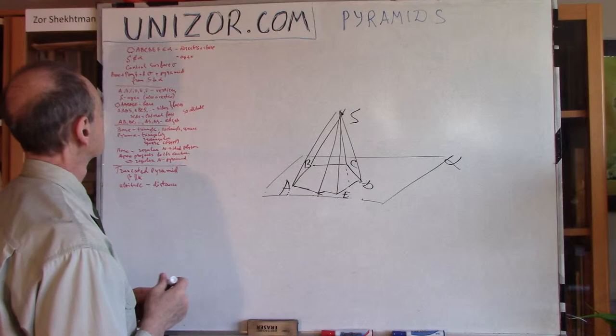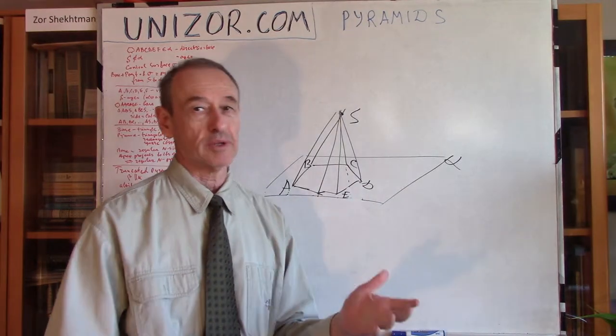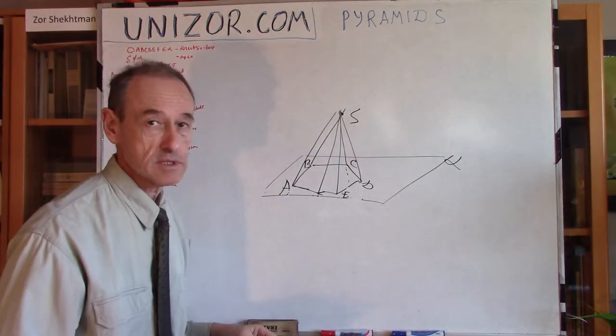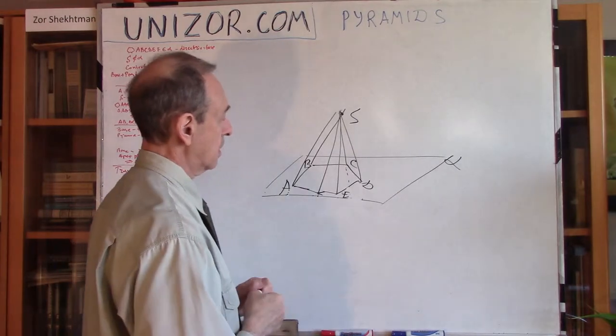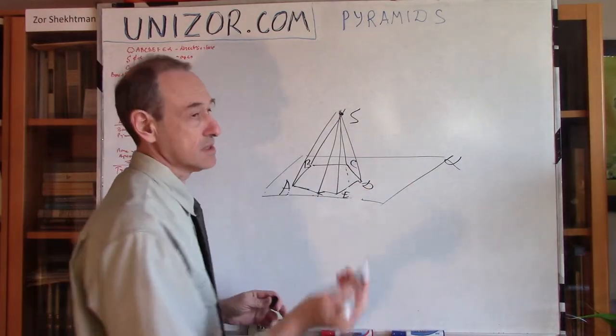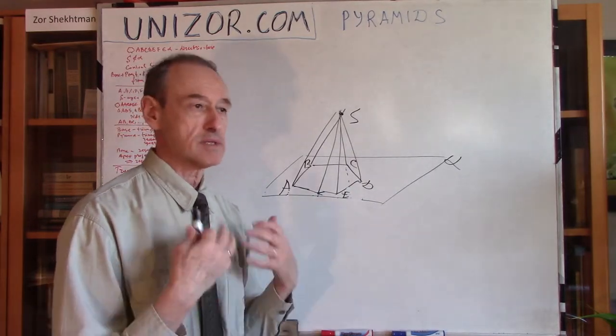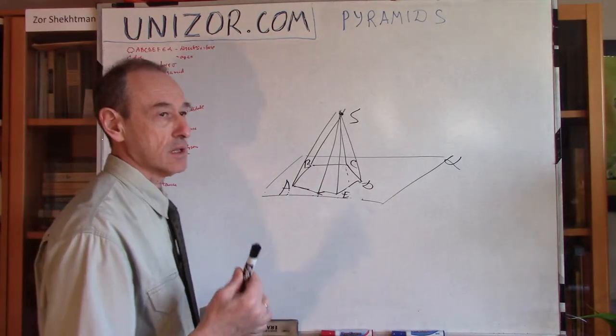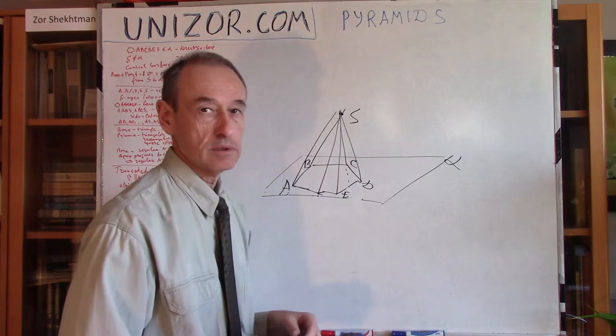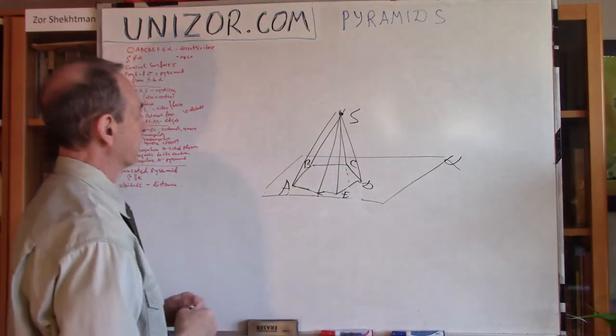Now, what are the elements of the pyramid? Now, we are talking about basically terminology. Now, these are point vertices. Same thing as in the polygon. The points are called vertices. Now, this is also a vertex. But this is a special vertex because it's actually an apex. So, you can call it a vertex, but it's better to call it an apex, then we will know what we are talking about.